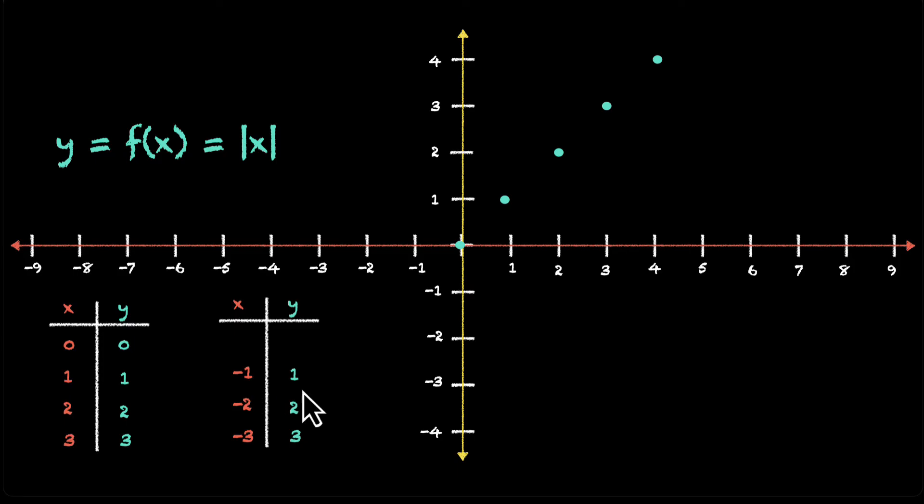For negative values, we have minus one, one, minus two, two, minus three, three, and so on. And if you see the pattern, you'll see that it has a V shape. It moves like this in the positive direction and it moves like this in the negative direction. And you can see that all the action is above the x-axis where y is positive. There is no action below the x-axis where y is negative.